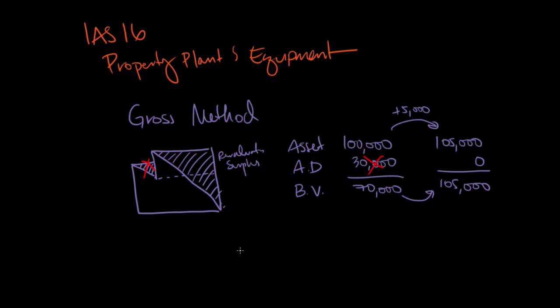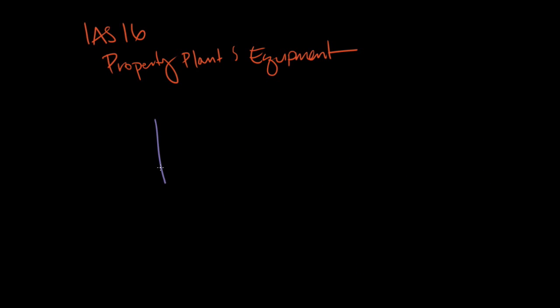The journal entry would look like this. You would debit your asset for the $5,000 increase. You could also debit accumulated depreciation for the $30,000 that was recorded, and the difference is going to be adjusted to revaluation surplus. So we still have the same amount of surplus of $35,000. They just are attributed to different accounts.